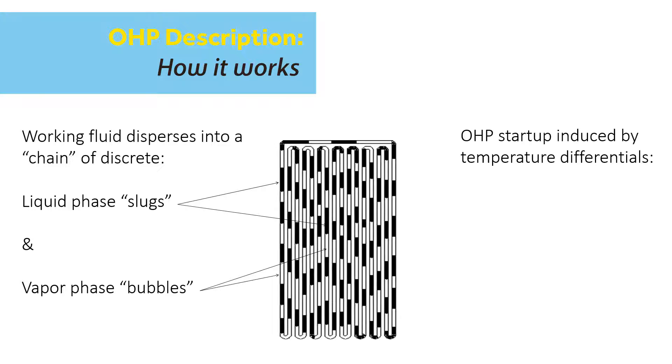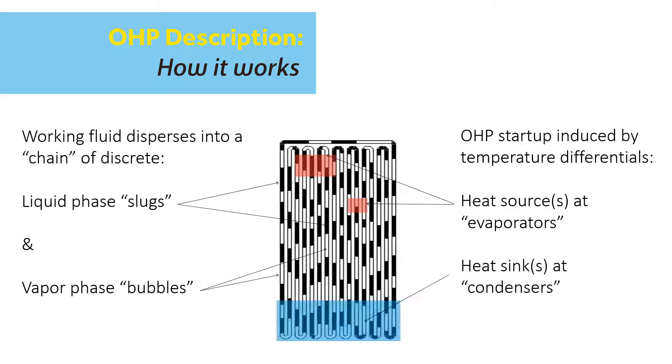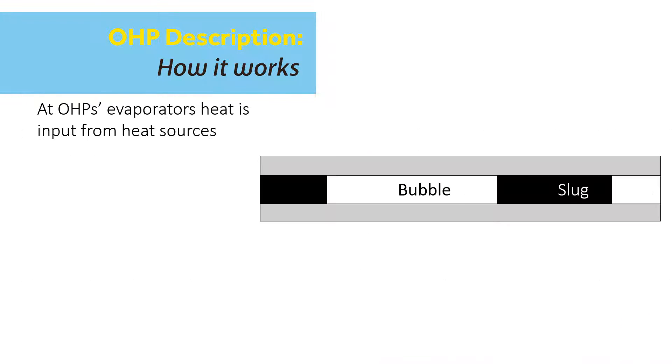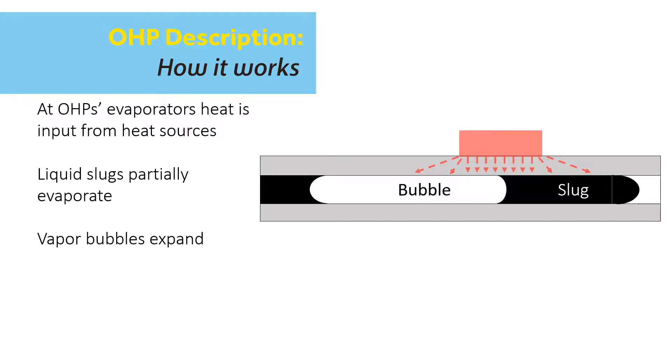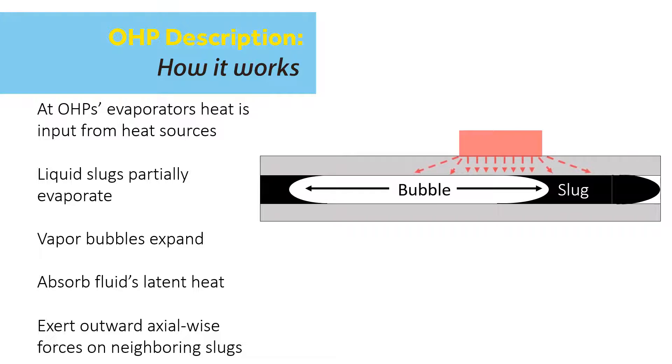The OHP starts up when a temperature gradient is applied to its surfaces by a heat source and or heat sink. At the heat source, the liquid slugs partially evaporate and expand axially. This both absorbs heat due to the enthalpy increase of the working fluid and exerts an outward axial-wise force on the chain of neighboring slugs and bubbles.